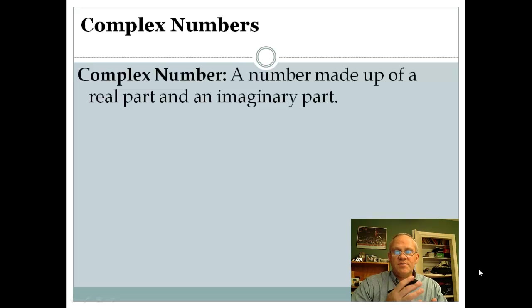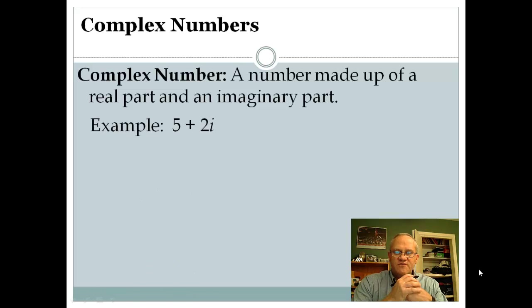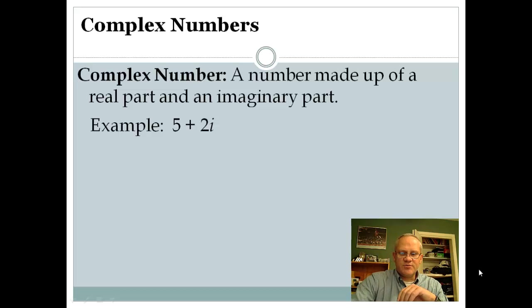Complex number — what is a complex number? Basically, it's just a number made up of a real part — that's the number part — and an imaginary part. And that's where it's being added or subtracted in between. Here's an example: 5 plus 2i. That's what they consider a complex number. The 5 and the 2i are not considered like terms, so you can't just add them together.